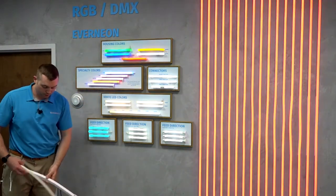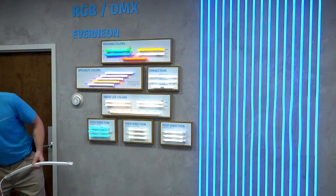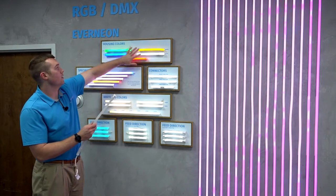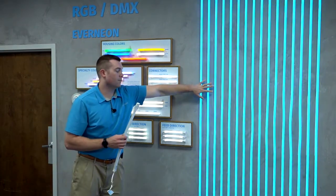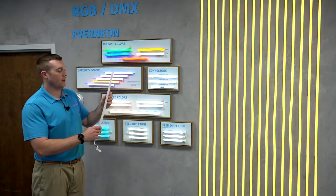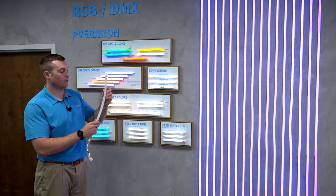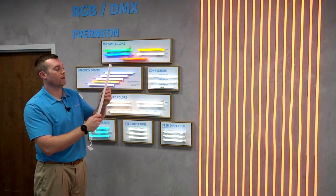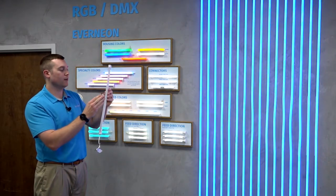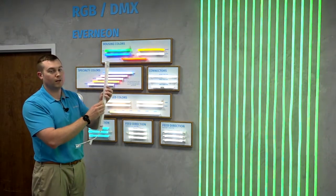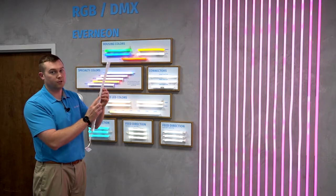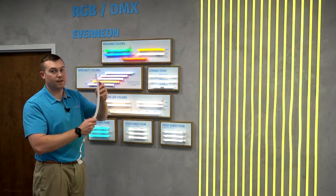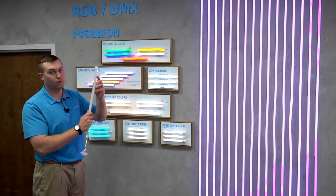The first series I'm going to talk about is our Elite series Everneon. This is the one in my hand up here and on the wall to my left. This is a flexible LED neon replacement product. It has a 270 degree beam angle. The reason for that is it gives you face illumination as well as a nice profile illumination when it's flush mounted into the track. This product has the ability to flex horizontally and is the only flexible option that's available for this product.